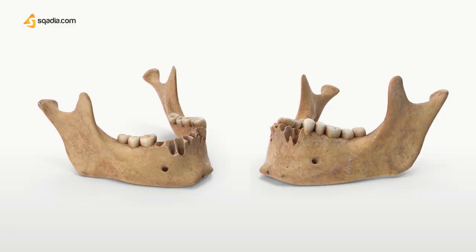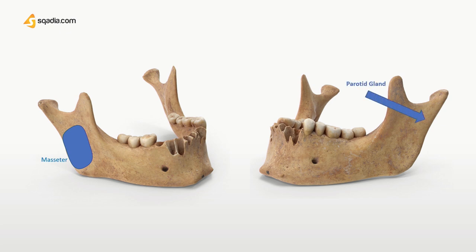Now heading towards attachments of the ramus. The masseter — the master of mastication — is involved in elevation of the mandible and is the chief muscle of mastication. The whole lateral surface of the ramus, except the posterior superior part, provides insertion to the masseter muscle. The posterior superior part of the lateral surface is covered by the parotid gland.